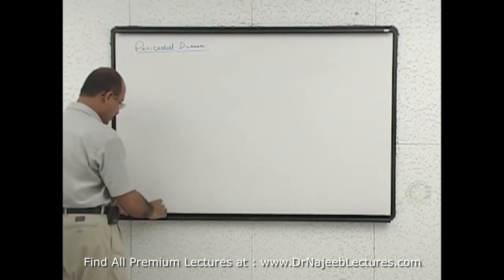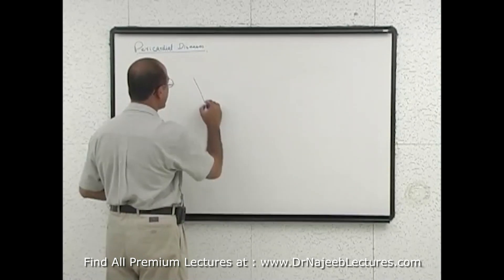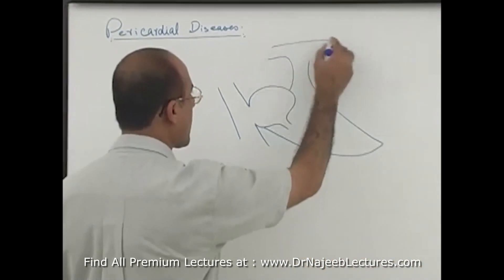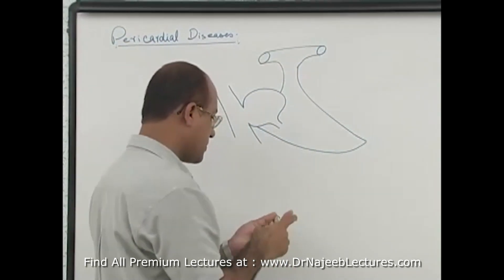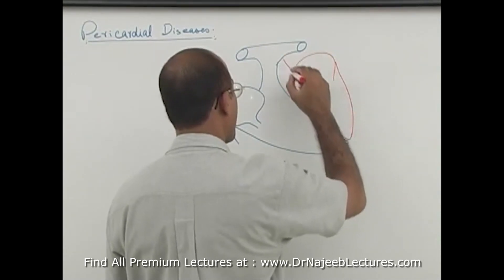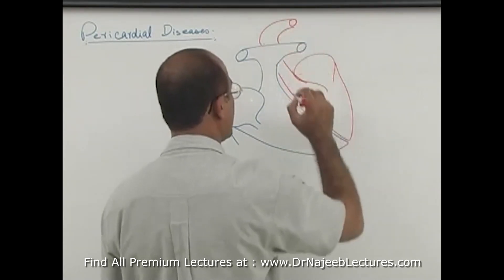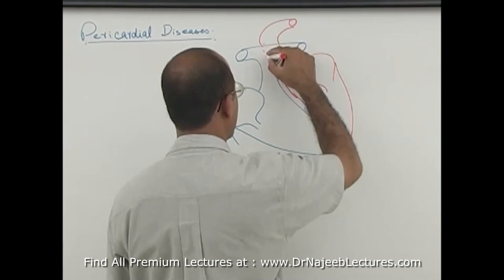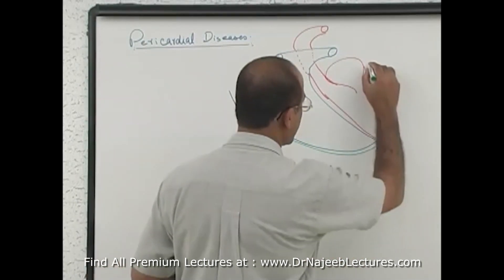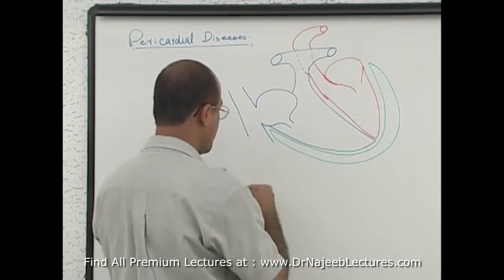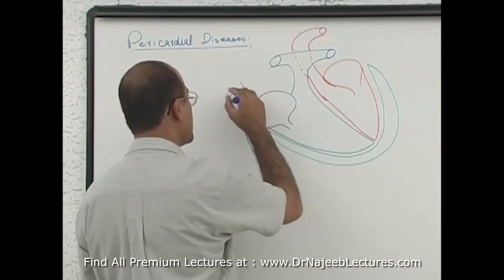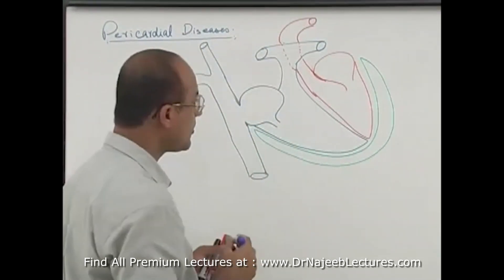Okay, you draw this diagram and you'll remember it for a long time. Here is your right heart, and of course here is your left heart, and here is your pericardial sac.